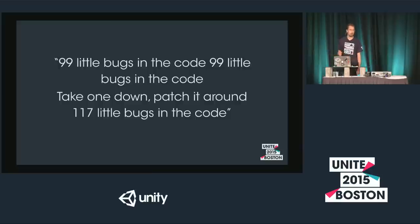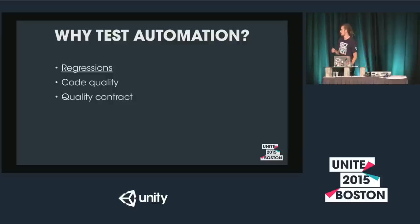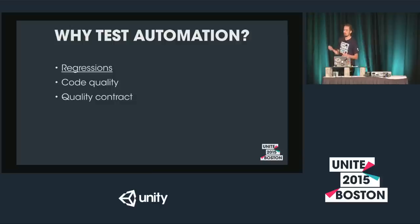It depicts the main purpose of test automation very well, which is finding regressions in your code. Regressions are newly introduced bugs — bugs that were not there before and that probably should be fixed. Test automation is perfect for finding those. Another thing test automation brings is improved code quality: writing testable code enforces you to make your code modularized and isolated, which improves quality overall.